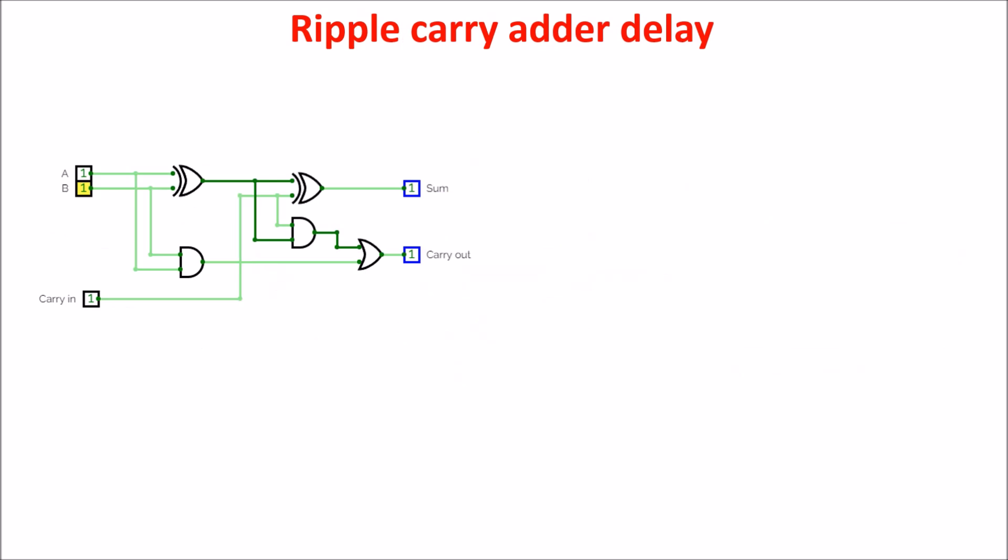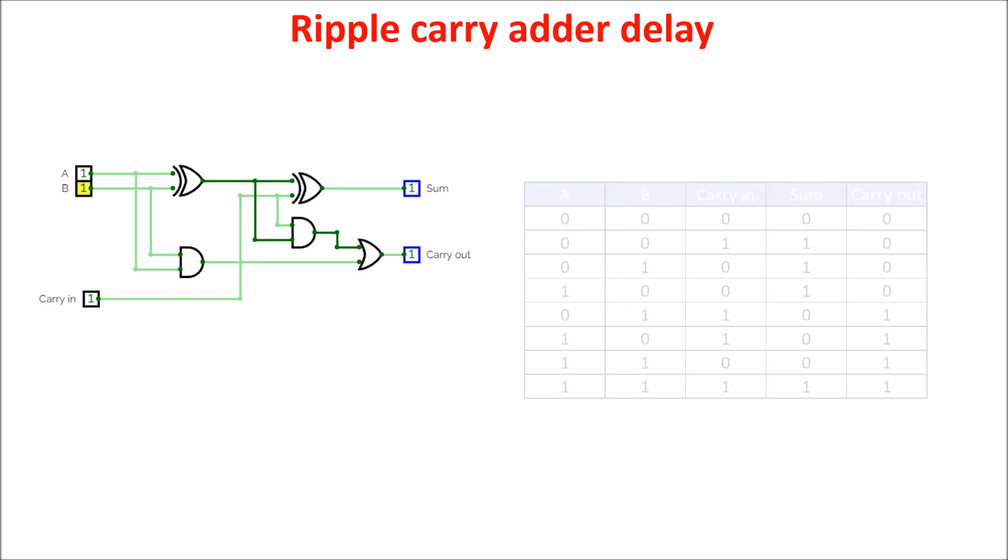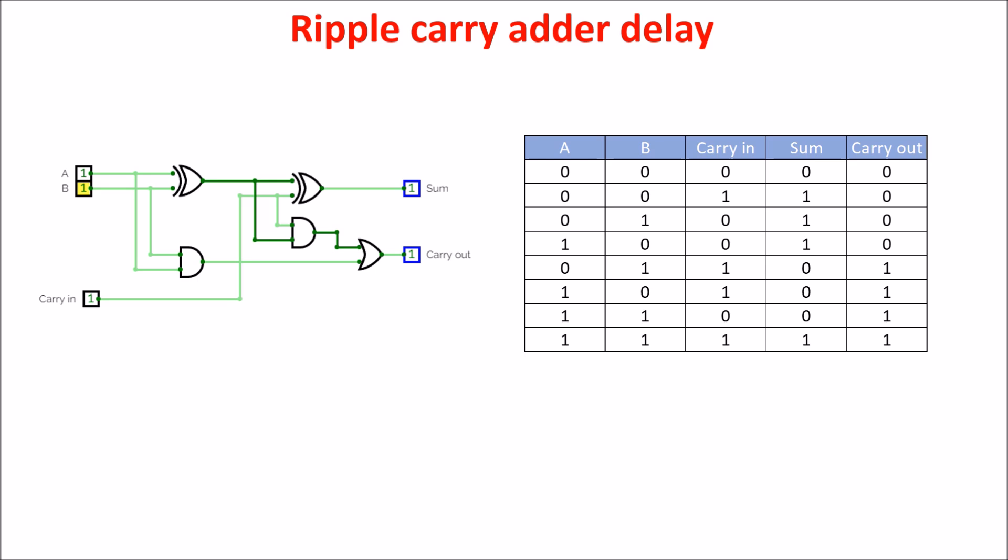In order to see the delay of the ripple carry adder, let's build the full adder in a different way. So if we fill the truth table of the full adder, we have this. If we look carefully at this part here, we have three inputs A, B and carry in, and the output sum.